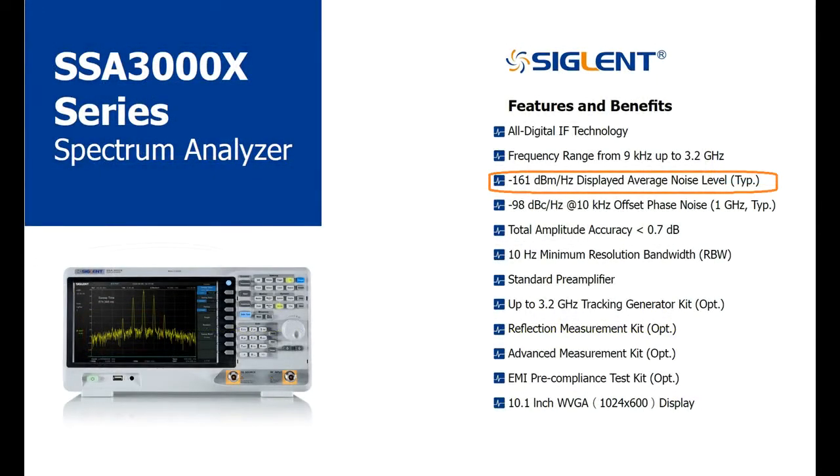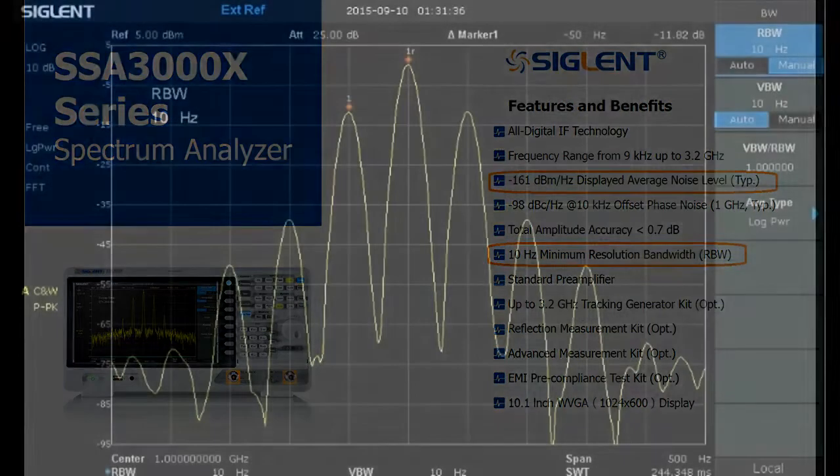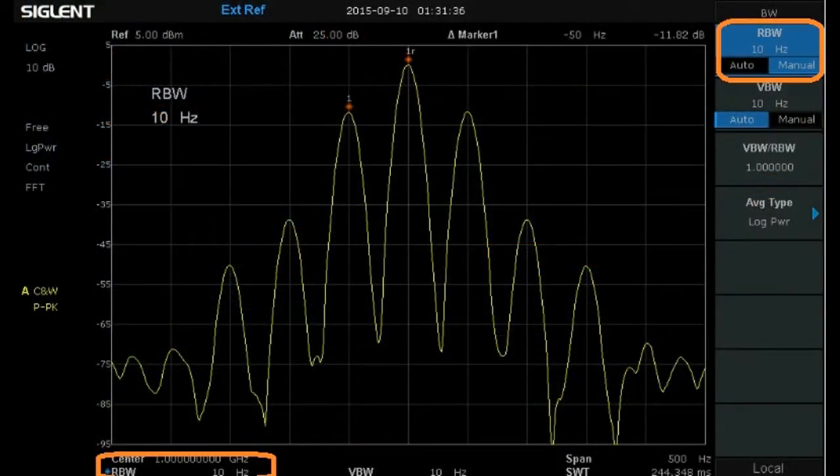The SSA 3000X also features a 10 Hz minimum resolution bandwidth setting. This provides a lower noise floor and also provides better frequency resolution when comparing it to the minimum resolution bandwidth of 100 Hz found on similar analyzers. Basically the lower the resolution bandwidth, the closer you can discern between two signals that are close together and it has the added effect of lowering the DANL or noise floor.